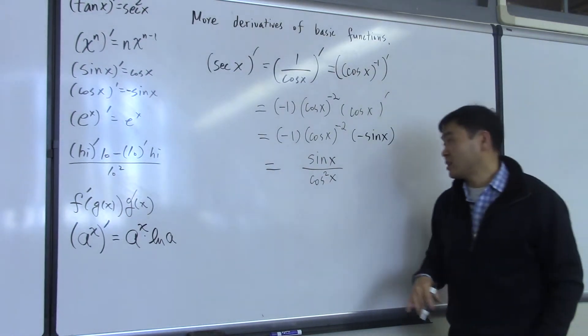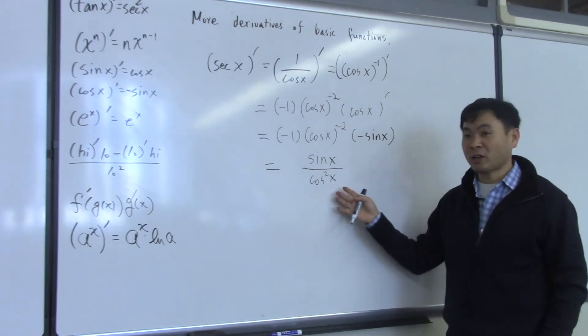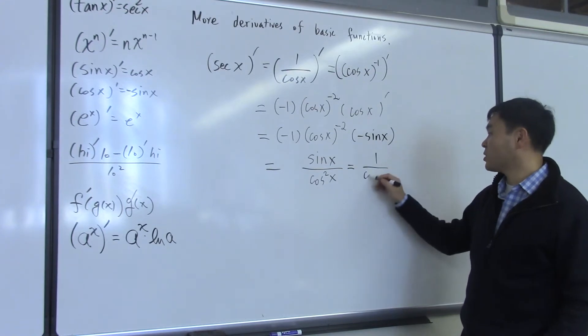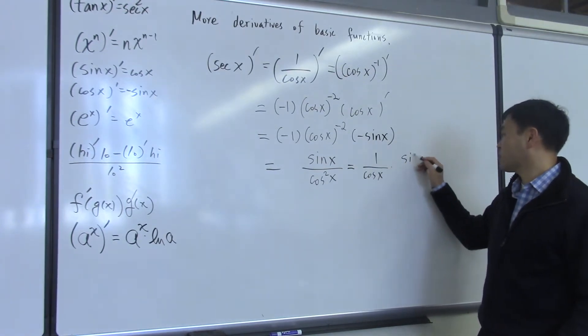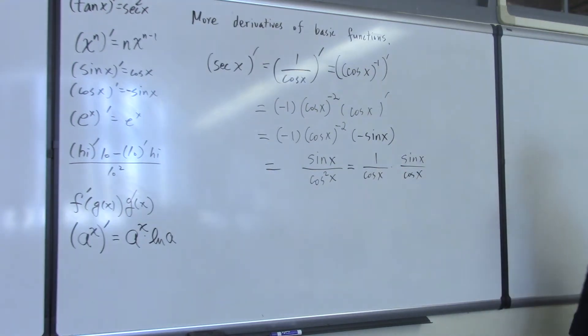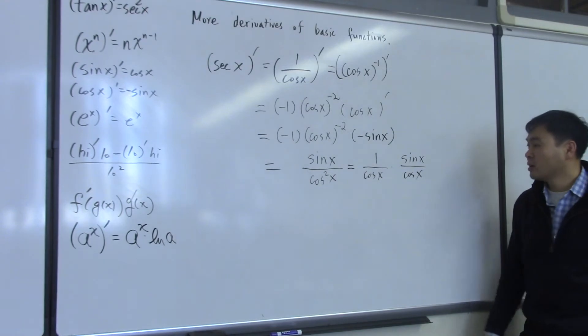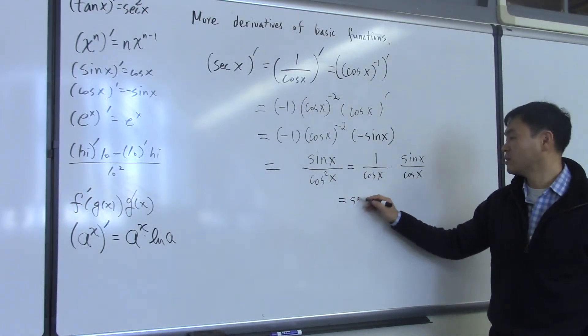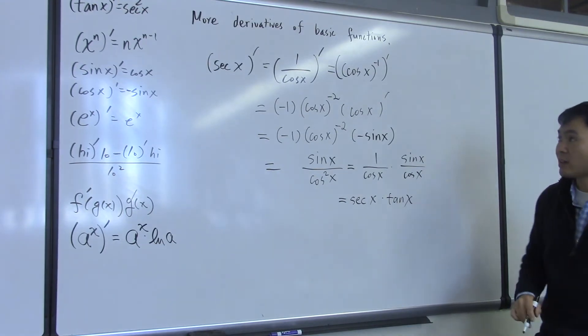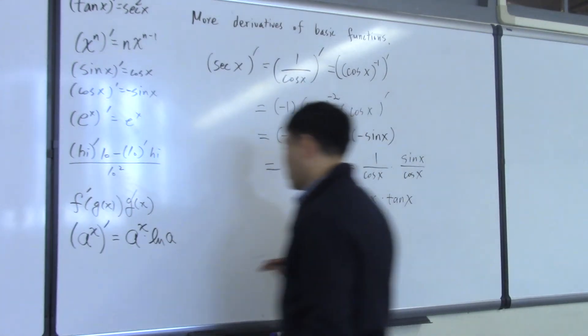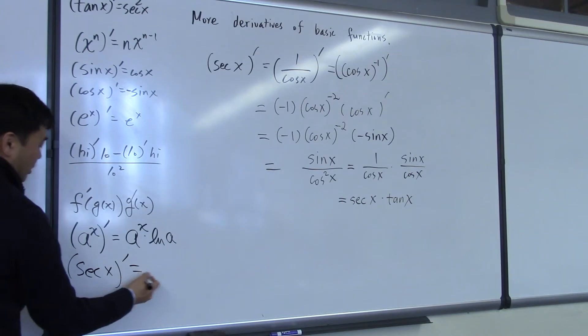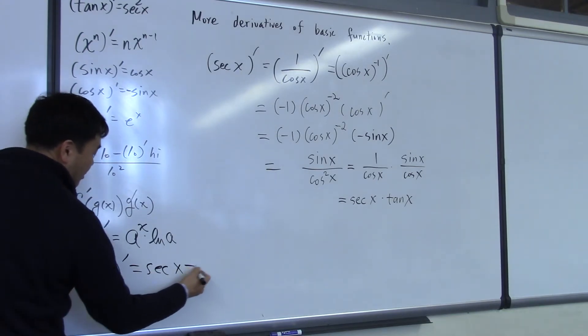So, this is the derivative of secant x, but often, people will try to write down the simplified version. You can rewrite this as one over cosine x times sine over cosine x. That's sine x over cosine x. One over cosine x times sine x over cosine x. And this is secant x, and this one is tangent of x. So, that's the common thing that people write. So, secant of x differentiates to secant x tangent x. And the list grows.